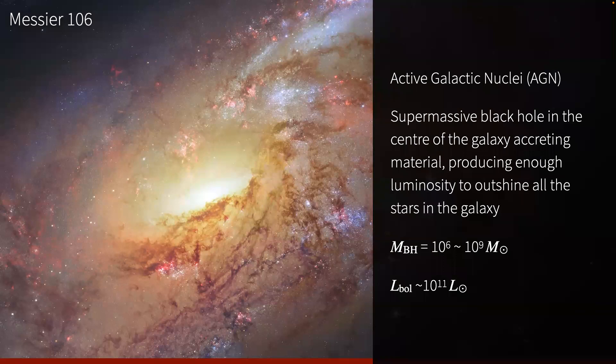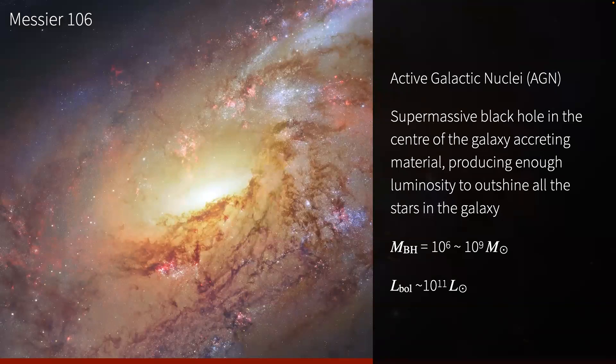So first of all, what is an AGN? An AGN, or active galactic nucleus, is when the supermassive black hole in the centre of a galaxy is accreting material. Material falling into that black hole releases gravitational energy, enough to power some of the brightest light sources we see in our universe. If we ignore explosive phenomena like supernovae and gamma-ray bursts, AGN are the brightest continuous sources of electromagnetic radiation that we know about.